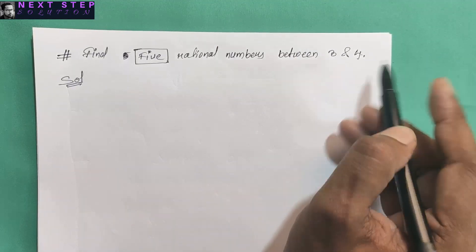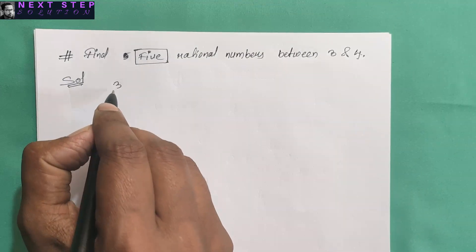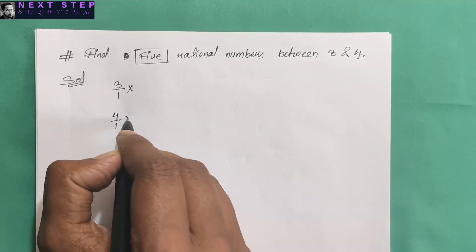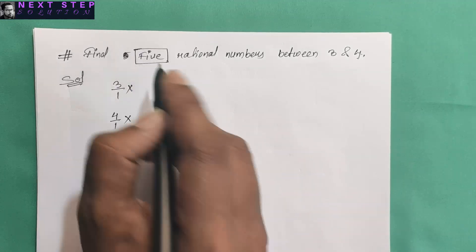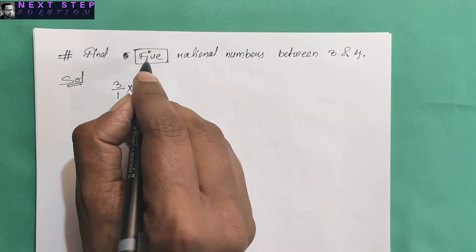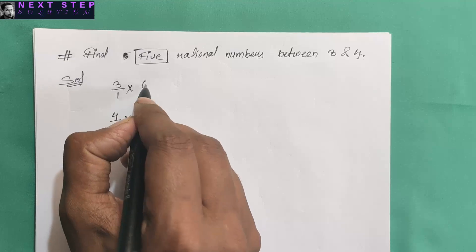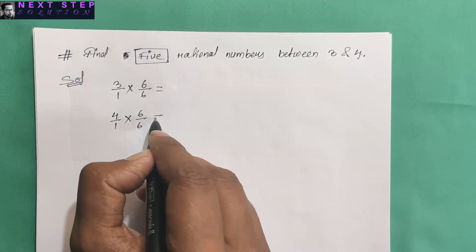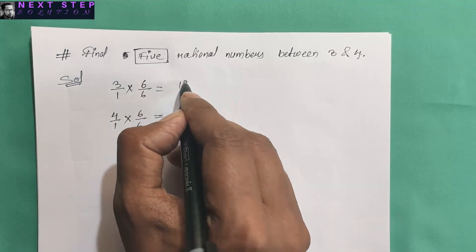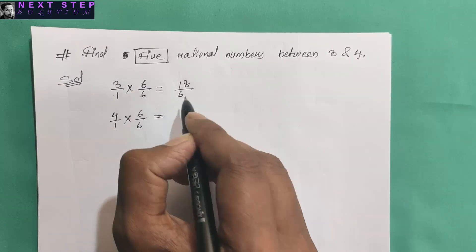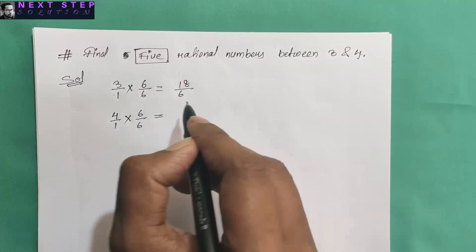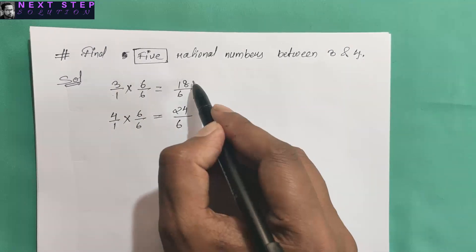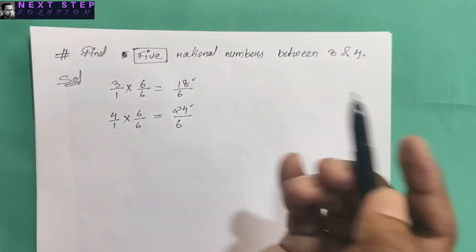In this question we have the same denominator. Three can be written as three by one and four as four by one. We are asked to find five rational numbers, so we multiply with a number bigger than five — we choose six. Multiplying both numerators and denominators: three times six is eighteen over six, and four times six is twenty-four over six.